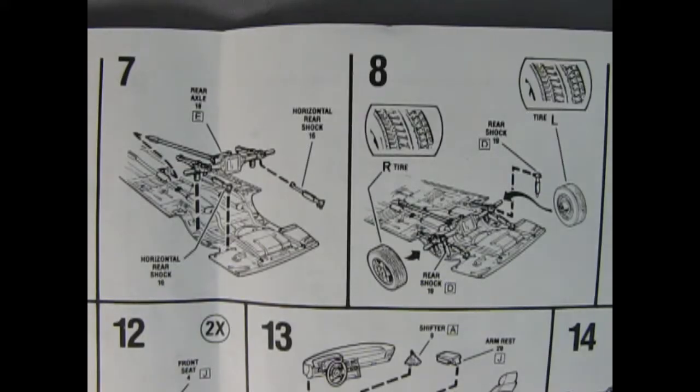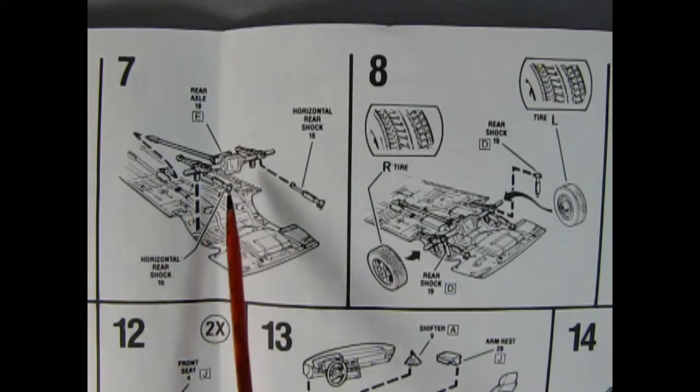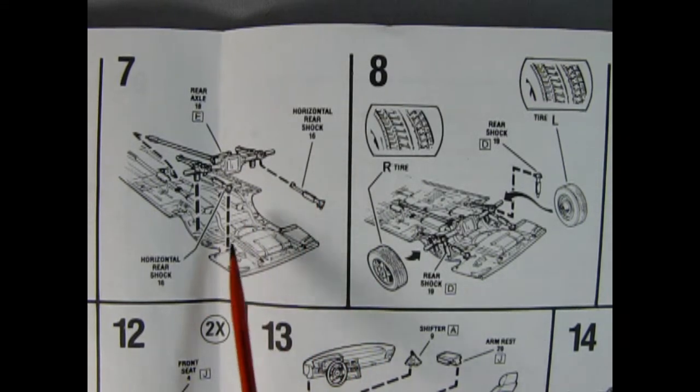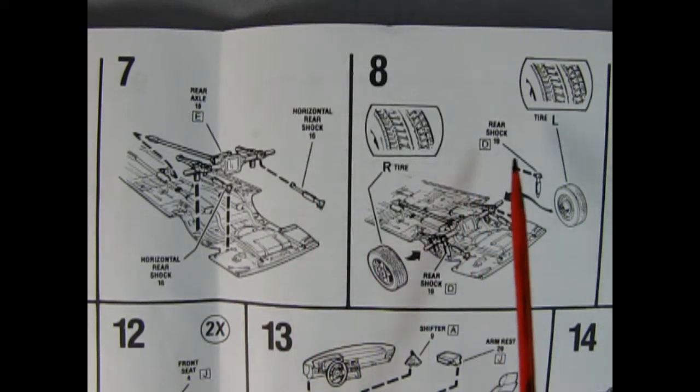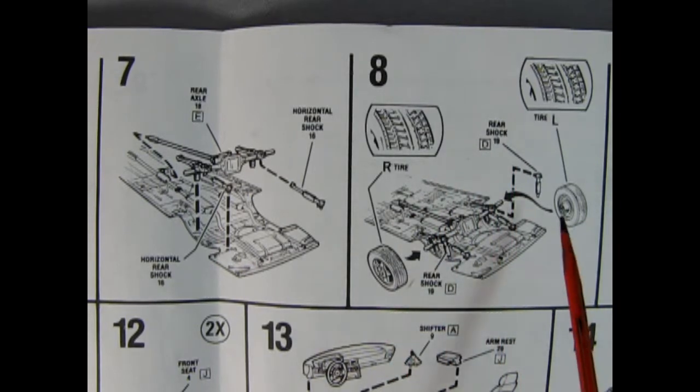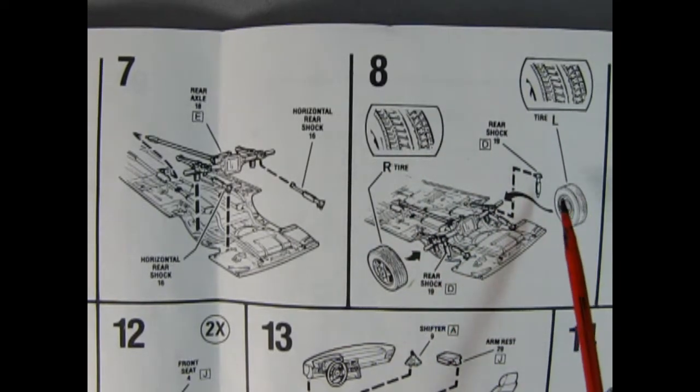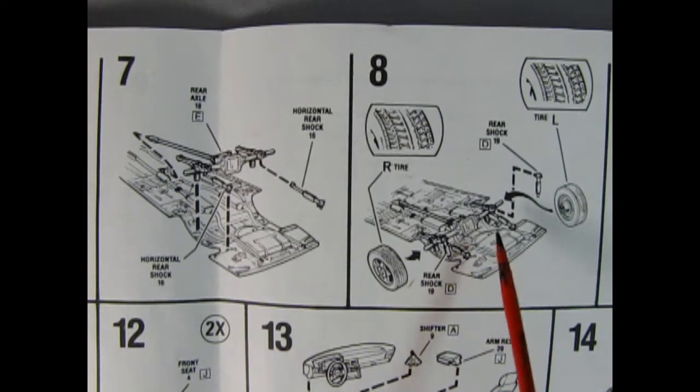Panel seven shows our rear axle assembly being glued in place. We also have these horizontal rear shock absorbers which we'll attach on there. In panel eight, we've got our rear tires going on, same as with the fronts. Again, watch your directional rubber on there. That's your tread pattern, of course. Then you also add in these rear shock absorbers as well.